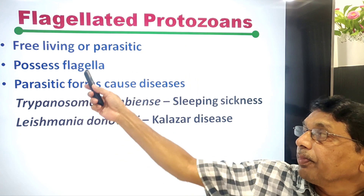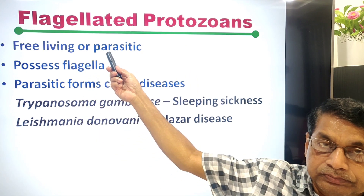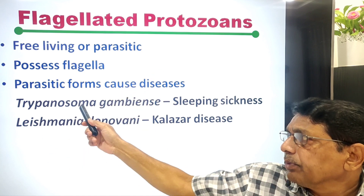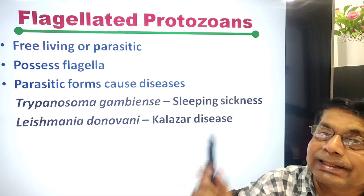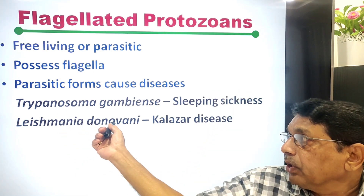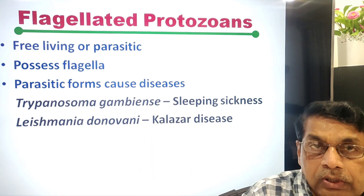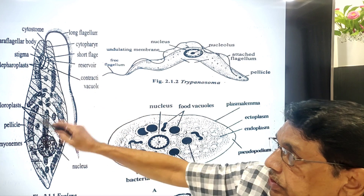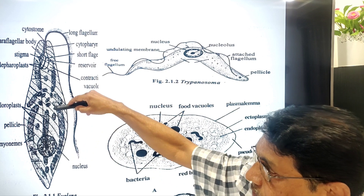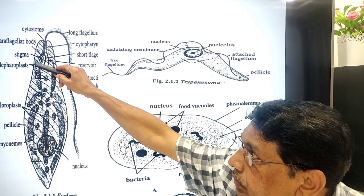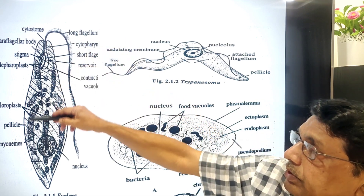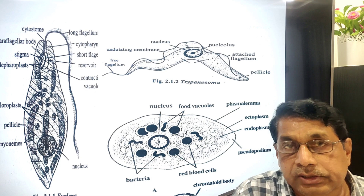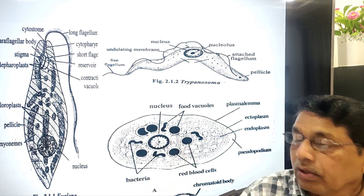Flagellated protozoans are free-living or parasitic. Parasitic forms cause disease — for example, Trypanosoma gambiae causes African sleeping sickness, and Leishmania donovani causes kala-azar disease. A typical Euglena shows structures including the pellicle, flagellum, small flagellum, chromatophores, myonemes, and cytostome. Trypanosoma gambiae is a blood parasite, and Entamoeba histolytica is also shown.